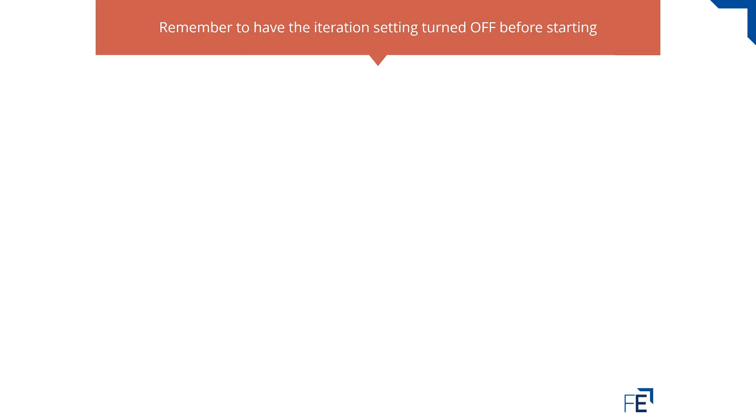The first thing to say when building a three-statement model is to remember to have the iteration setting turned off before starting.